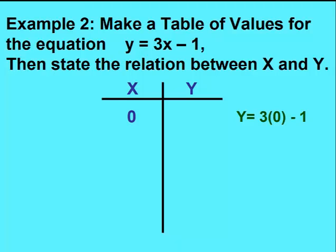We substitute that into our equation. So y equals 3 times 0 minus 1, which is minus 1. We'll plug in 1 for x, substitute it into our equation, and y equals 2.